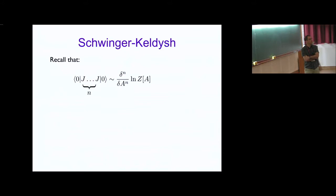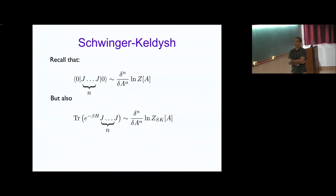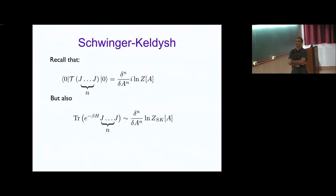Let me remind you what we're talking about when we say the Schwinger-Keldish effective action. You're all familiar with the generating function of connected correlators — if we want to compute some n-point function in the vacuum we vary it n times with respect to sources. The Schwinger-Keldish effective action does something similar for thermal expectation values: if we want thermal expectation values of some operator, we vary the Schwinger-Keldish generating function n times with respect to the source.